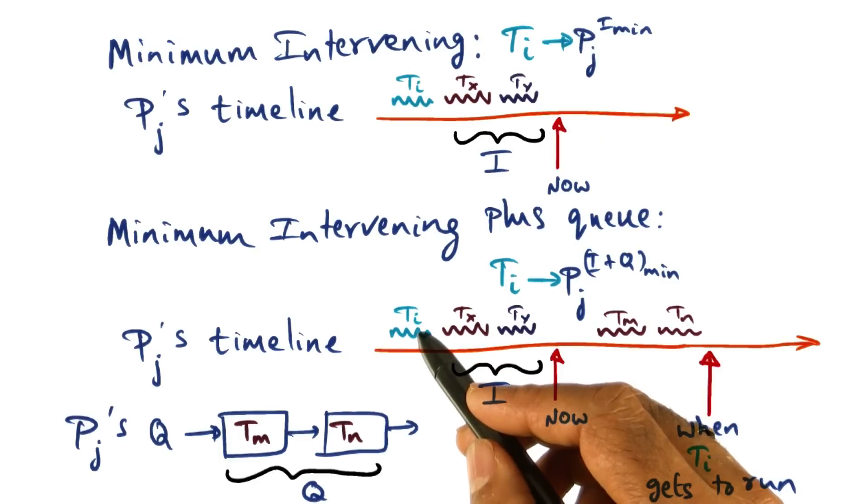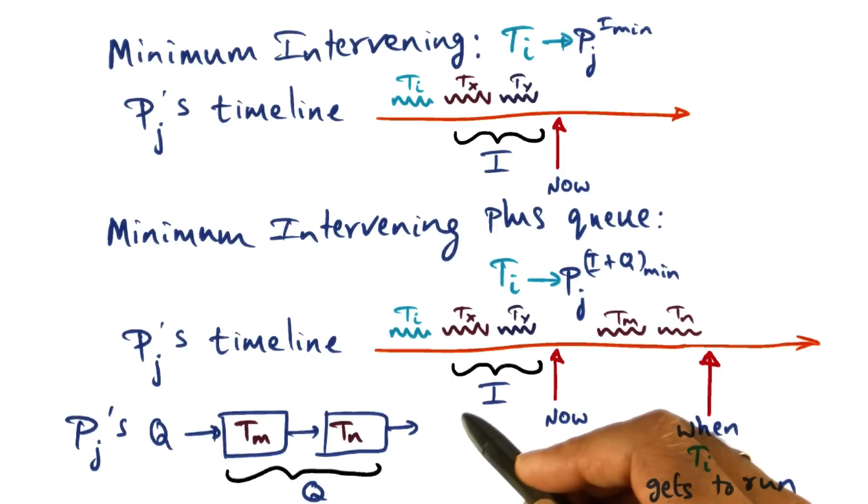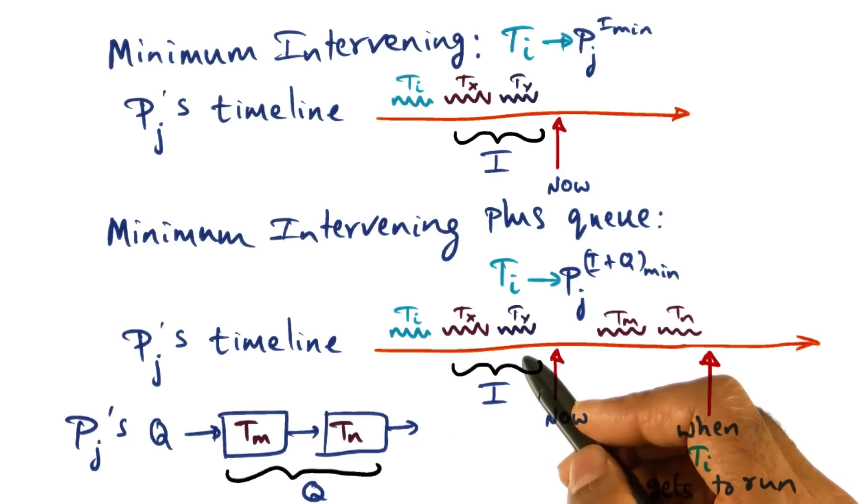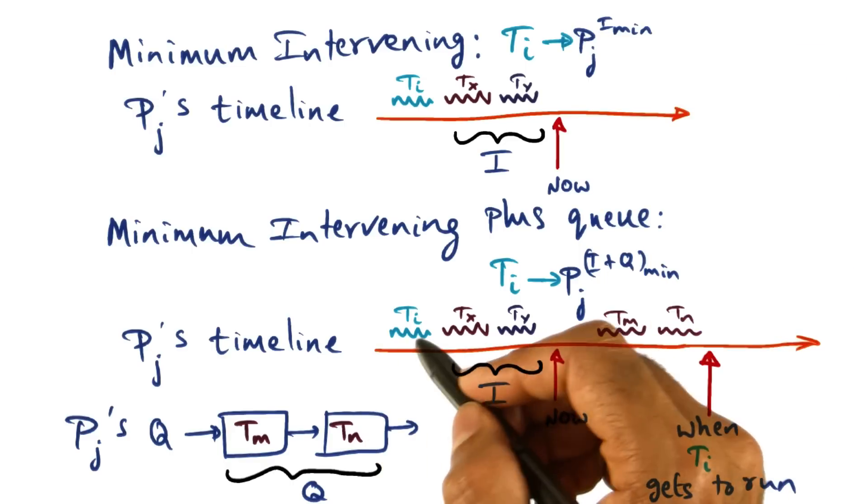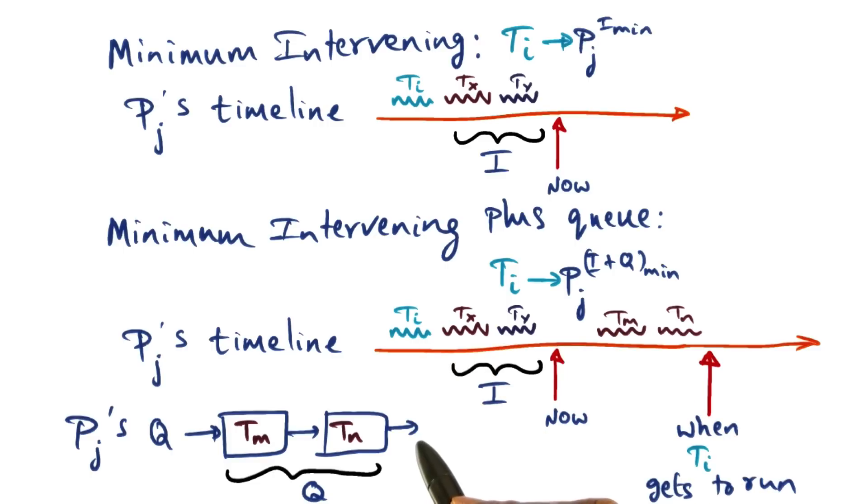So it looks like a good choice to put ti on pj if this turns out to be the minimum. But when I make that decision, what I'm going to do is I'm going to stick this thread ti in the scheduling queue of pj. And if the scheduling queue of pj has tm and tn already populated, then what's going to happen,